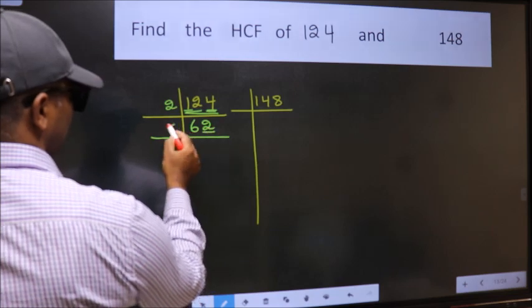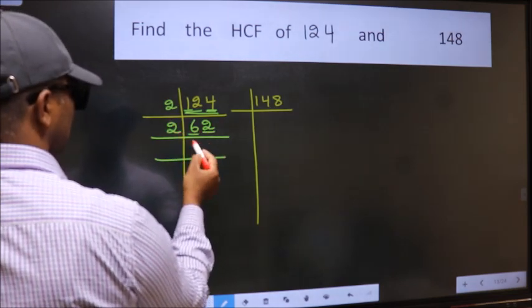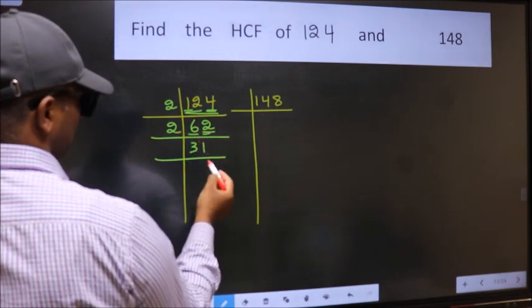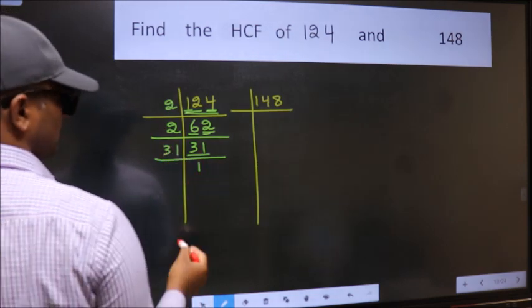Last digit 2 is even, so take 2. First number 6, when do we get 6 in 2 table? 2 times 3 is 6. The other number 2, when do we get 2 in 2 table? 2 times 1 is 2. Now 31 is a prime number, so 31 times 1 is 31.